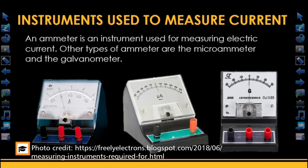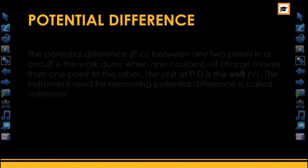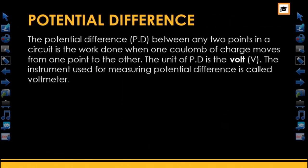Now let's take a look at potential difference. In the circuit, potential difference can be defined as the difference between any two points in the circuit. It is the work done when one coulomb of charge moves from one point to another. The unit of potential difference is the volt, that is V.